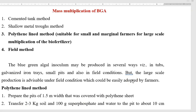Now we will look at the mass multiplication steps of BGA. The various methods by which you can mass multiply blue-green algae include: the cemented tank method, shallow metal troughs method, and polythene-lined method — which is best suitable for small and marginal farmers for large-scale multiplication. The last and most important method is the field method of mass multiplication of BGA. The two methods highlighted in bold — polythene-lined method and field method — are most important from the agricultural application standpoint.